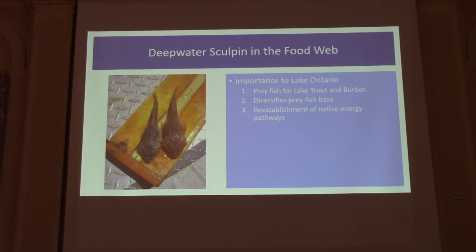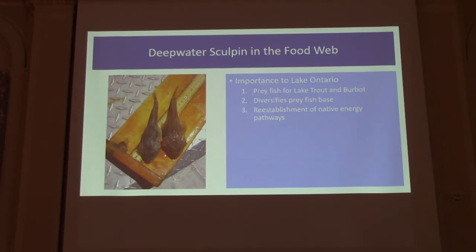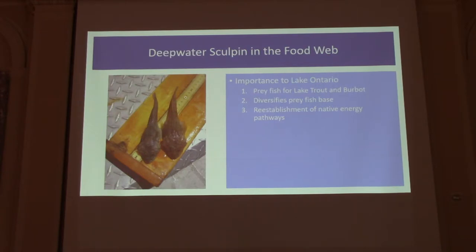So who cares about deepwater sculpin? Besides being really interesting fish and glacial relics, deepwater sculpin are a big prey fish component that traditionally were in Lake Ontario. For things like lake trout and burbot, these are probably relatively important prey items. They also diversify the prey fish base — although alewife are really important in the Great Lakes, it's really nice not to have all your eggs in one alewife basket. And they reestablish native energy pathways: the passage of materials from deepwater sculpin up into high trophic levels like lake trout.